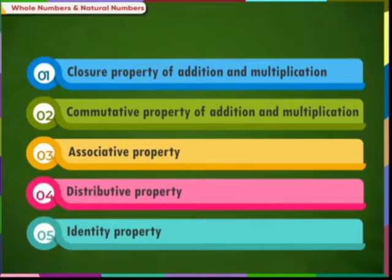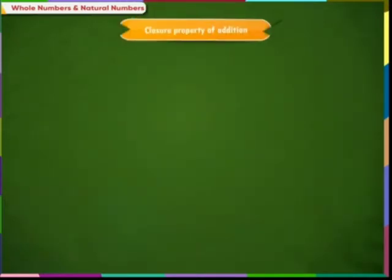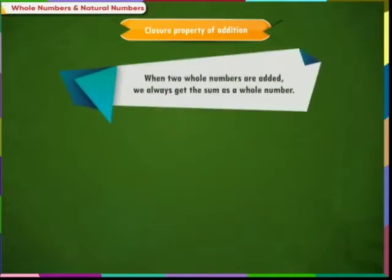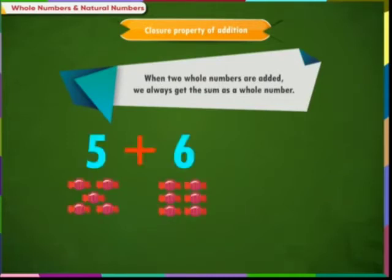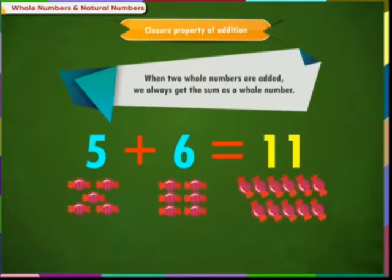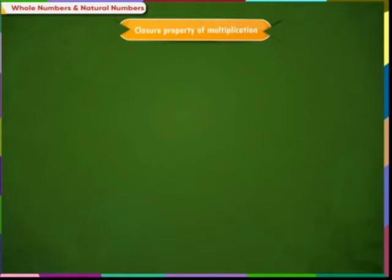First is closure property of addition. When 2 whole numbers are added we always get the sum as a whole number. For example, if we have 5 chocolates and we add these 5 chocolates with 6 chocolates, then we get 11 chocolates total.